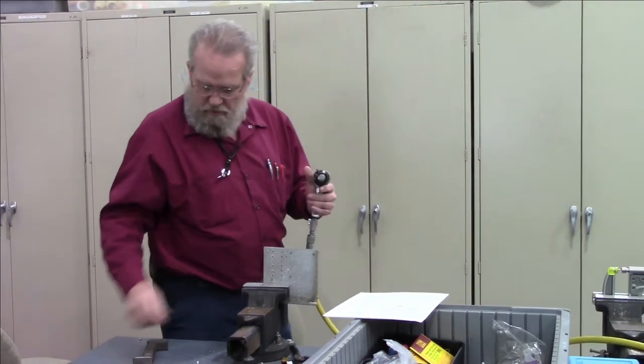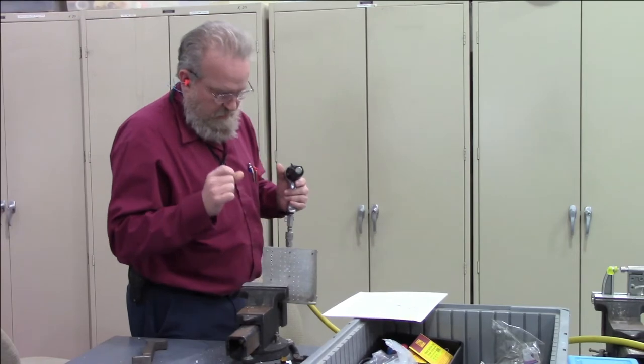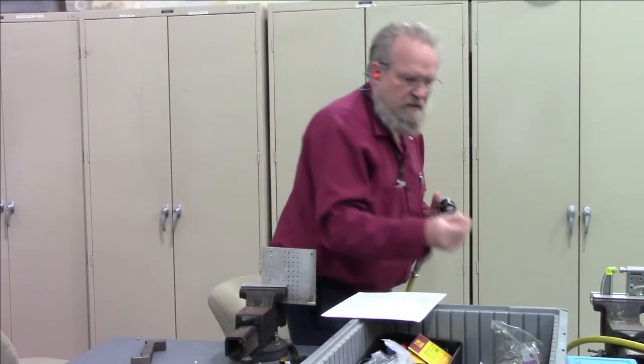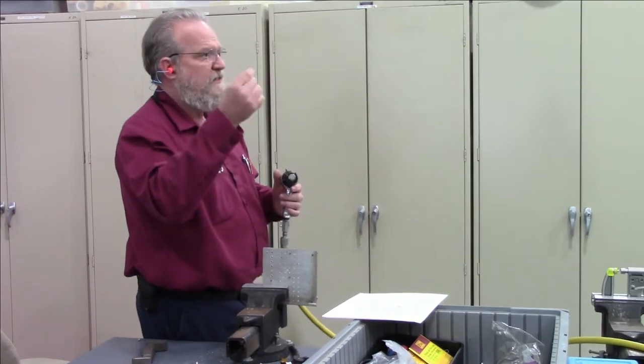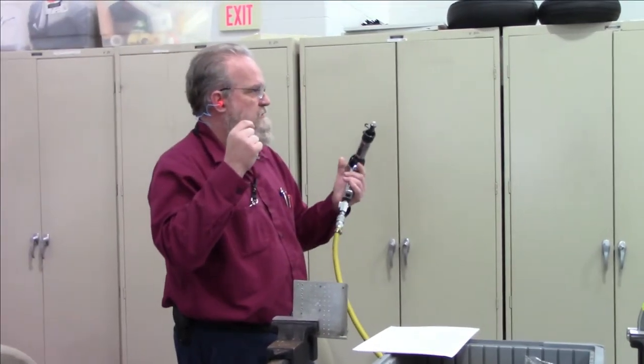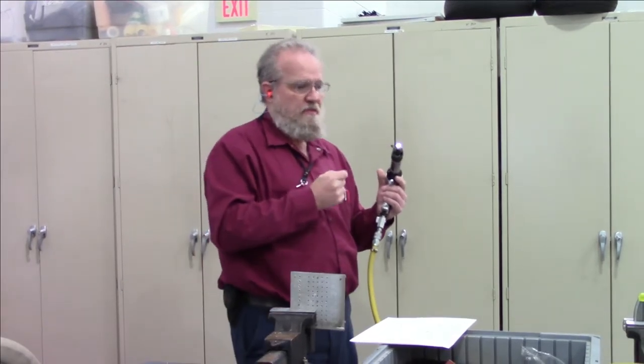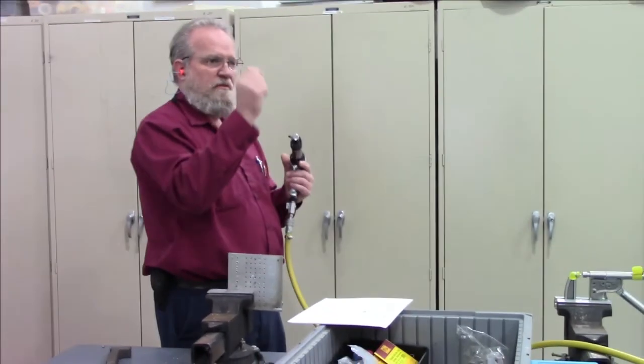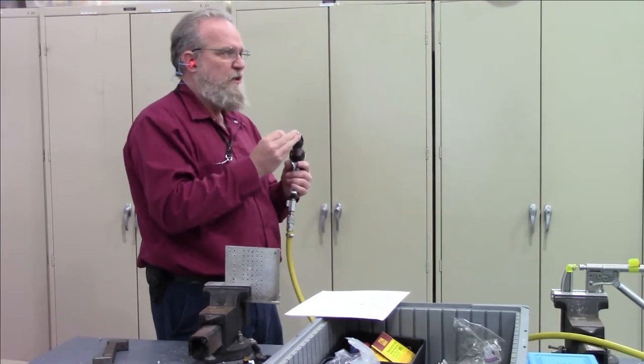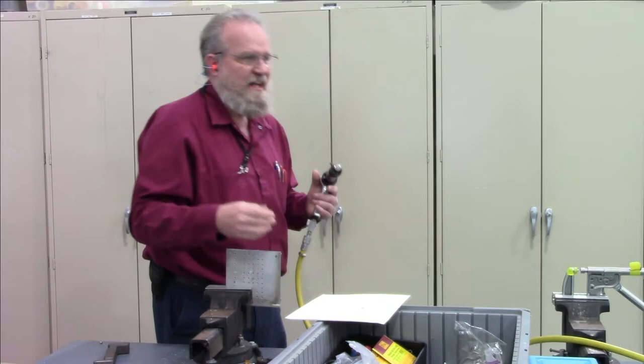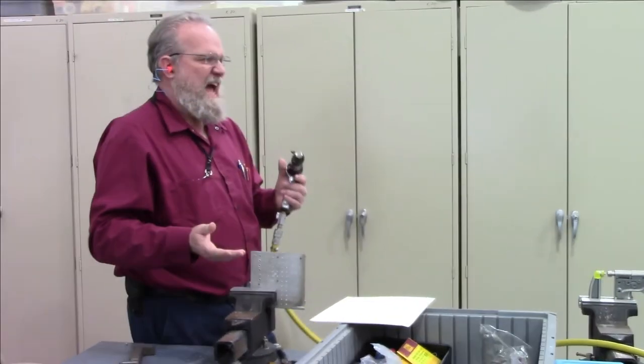When you go to rivet the AD3 rivets, the smaller ones, like this, you'll use less air pressure or less trigger, okay? So, make sure you set your gun up for what you're going to rivet. Otherwise, if you go to pound this rivet with the air pressure set for the bigger ones, what's it going to do? Smash it. It's just smash it. And you're going to bend your sheet, and then you won't pass that part.